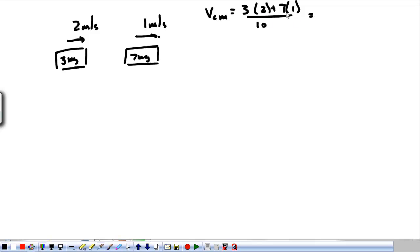So we have 3 times 2 plus 7 times 1 divided by 10. 6 plus 7 is 13. Divided by 10 is 1.3. So, now we have a number. The velocity of the center of mass is right here in the middle. 1.3 meters per second.